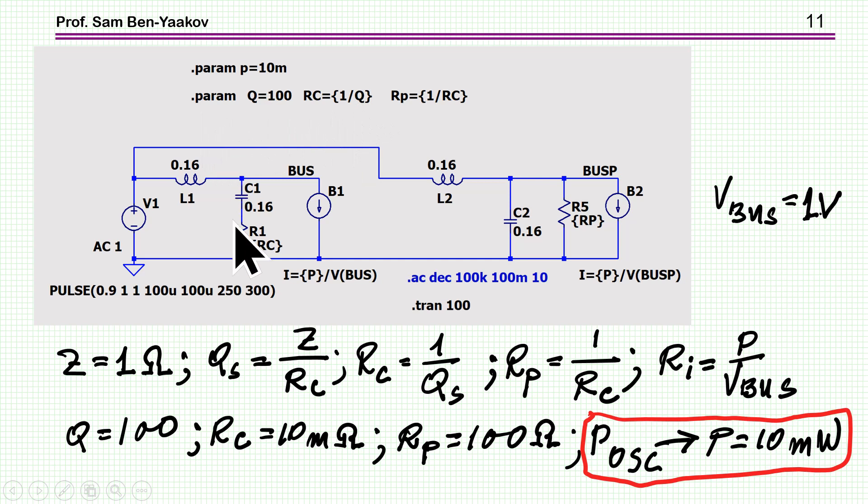So, the I times V_bus here will be equal to P. That is, I will be adjusted such as at any given time, the power of this unit is P. Everything is parameterized here, and once I'm defining R_C, then I'll get everything else. In fact, I've parameterized the whole system to the Q. That is, I'll be sweeping the Q from which R_C is calculated, and then R_P is also calculated. This is Z squared over R_C, Z is 1.